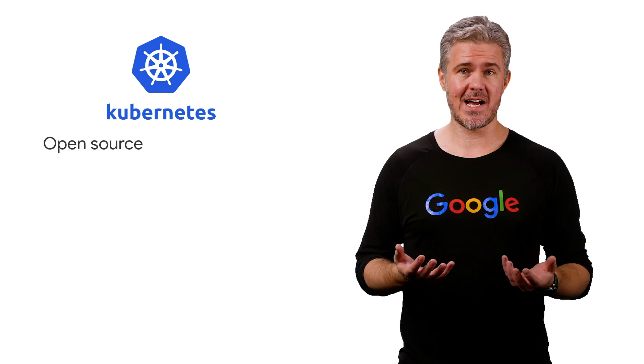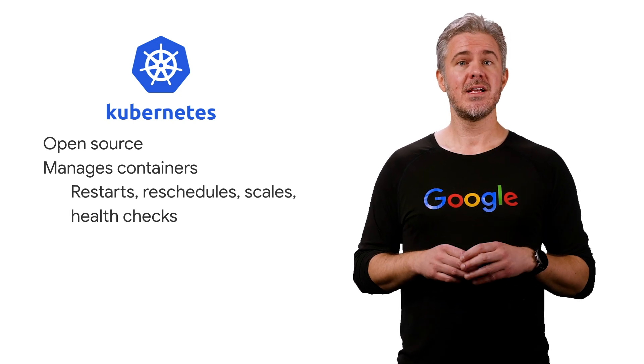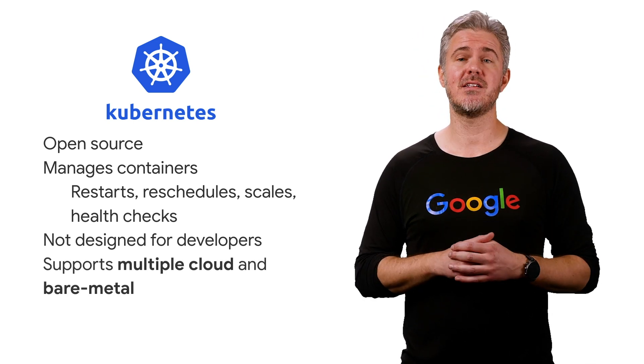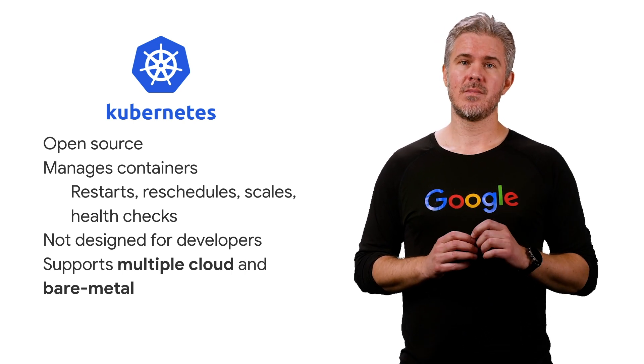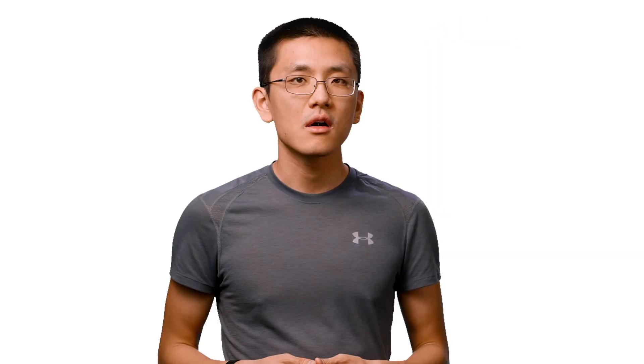Kubernetes does things like making sure your containers are alive — it restarts containers and nodes as needed and makes things highly available. It also allows your services to talk to each other, which is important for distributed training, and it handles load balancing of requests. It allows you to run your containers reliably at scale. But at the end of the day, Kubernetes is really a tool for DevOps teams, not developers. As a machine learning engineer, you shouldn't really be writing Kubernetes configuration files — that is a separate full-time job. But Cloud Run abstracts much of that away, making it much easier to interact with a Kubernetes cluster.